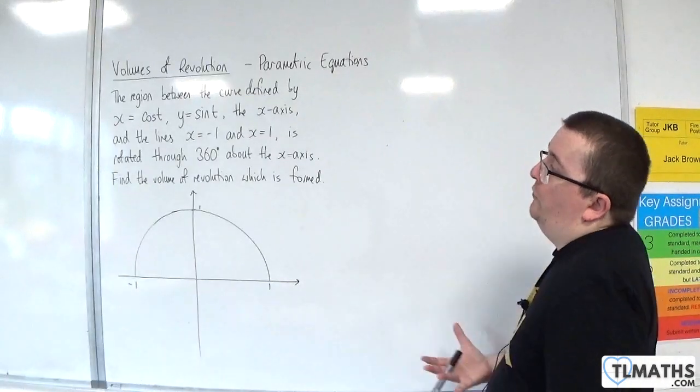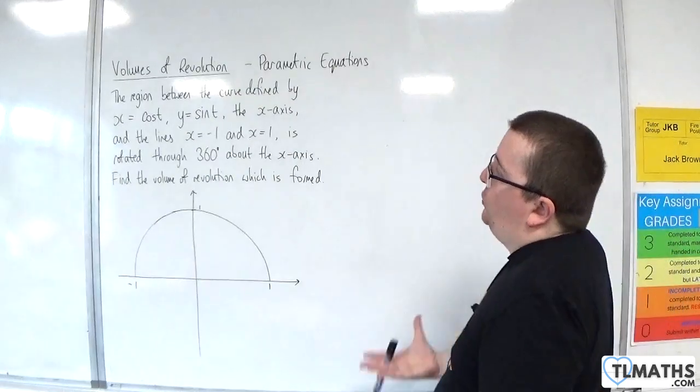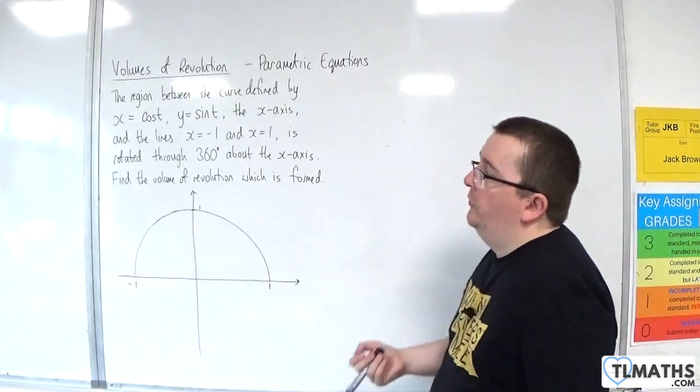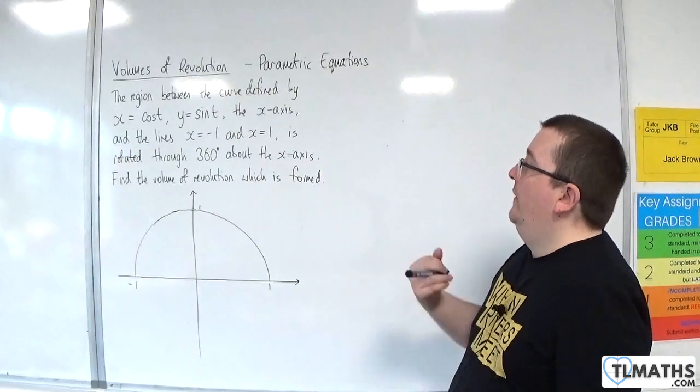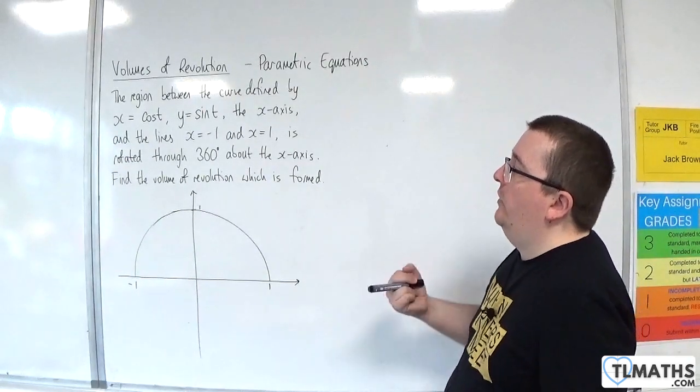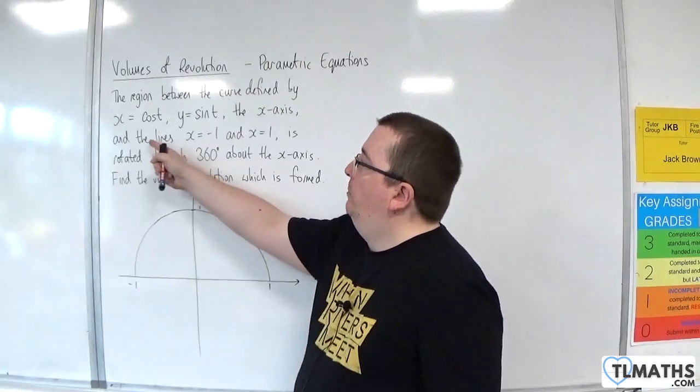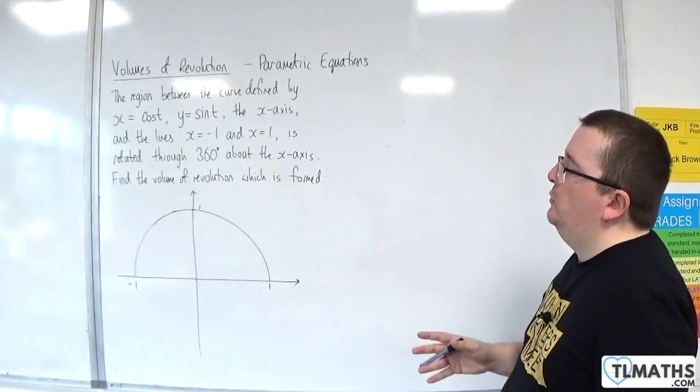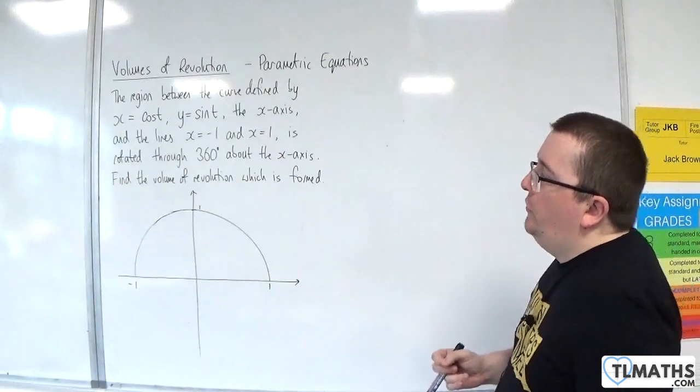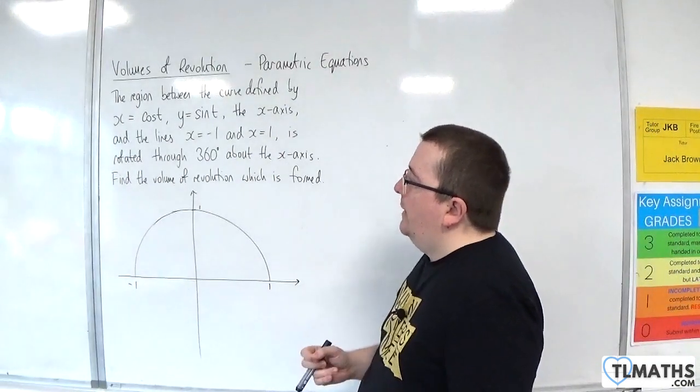So in this video, we're going to go through this example where we've got the region between the curve defined by x equals cosine of t, y equals sine of t, the x-axis, and the lines x equals minus 1 and x equals 1. Now I know that this bit is going to be a bit redundant here, but I'm just making it clear. Is rotated through 360 degrees about the x-axis.